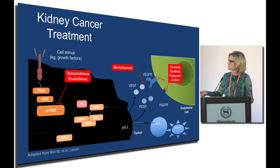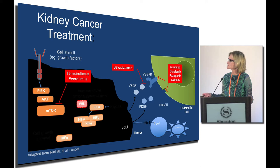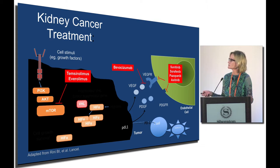There are really three broad classes of drugs we use in kidney cancer treatment. The most common are the VEGF inhibitors — drugs that target blood vessels. There's immunotherapy. And then the mTOR agents, grouped by these different classes.